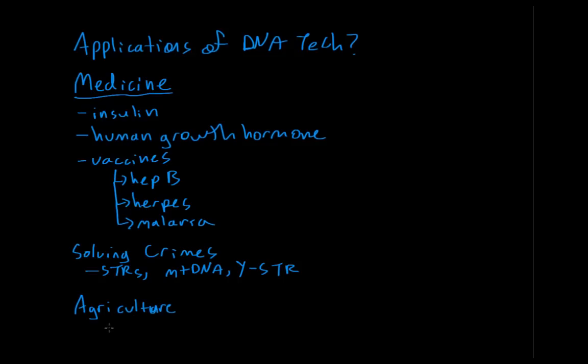Agriculture is another field that has greatly benefited from recombinant DNA technology. Scientists can now create crops that are resistant to insects and herbicides, and can also delay the ripening of crops so they can be transported from the farm to the store. By doing this, you're basically able to create more crops to feed a growing population. It also helps the economy because if some bacteria or virus destroyed a farmer's entire crop, that farmer wouldn't get paid for that season. So by transgenically modifying crops to be resistant to specific things, they're able to grow, sell, and feed individuals.